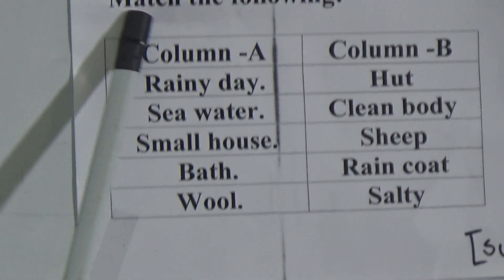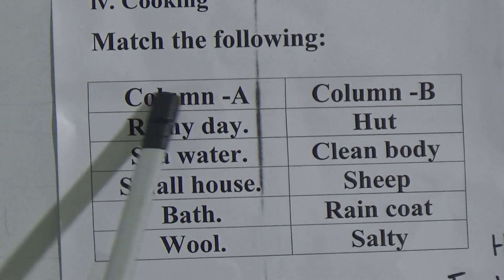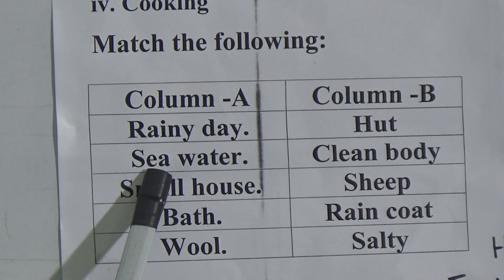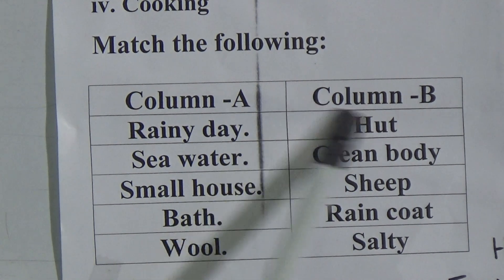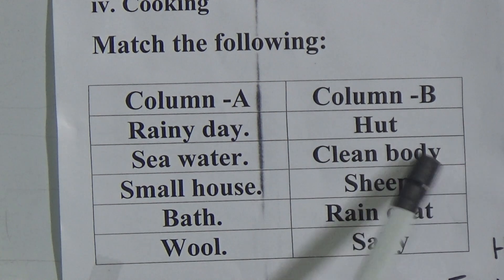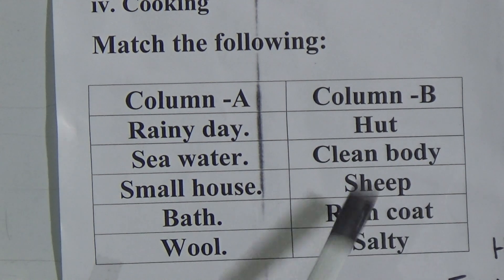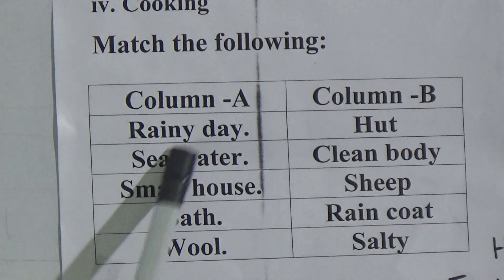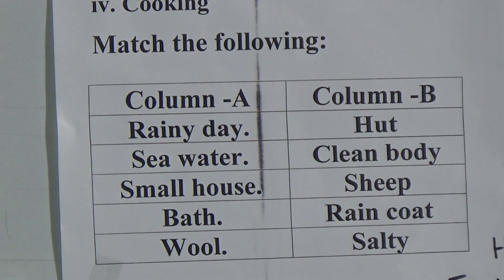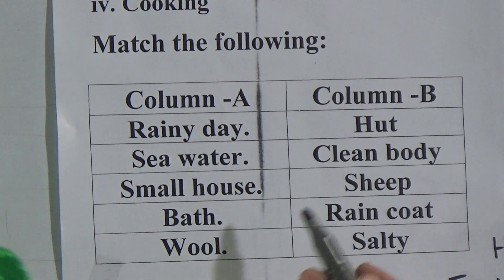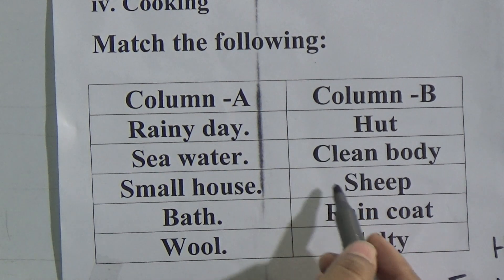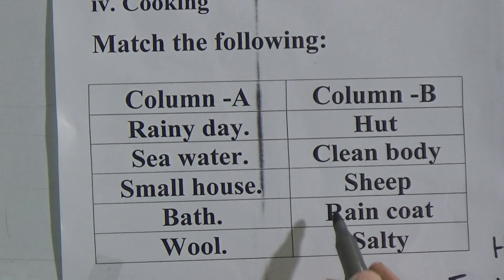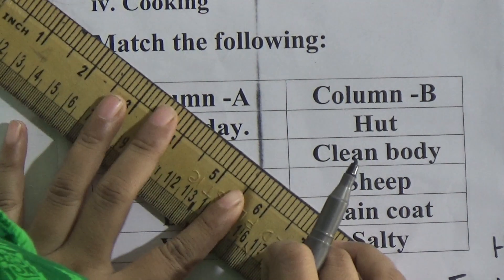Now we will solve the matching. In column A, the words given are: rainy day, sea water, small house, bath, and wool. Column B has the words: hard, clean body, shape, raincoat, and salty. We will match the following. First one is rainy day — looking at the options: hard, clean body, ship, raincoat — yes, raincoat matches.